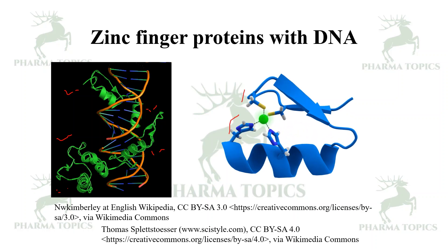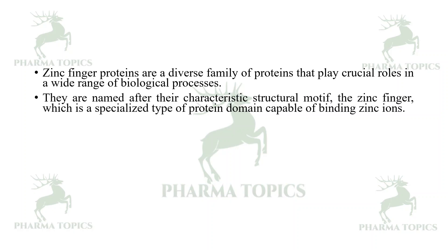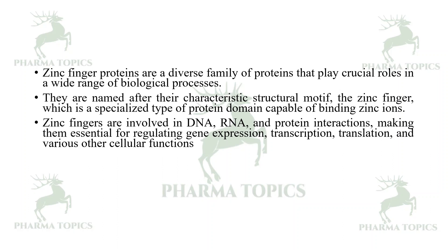Classically, two cysteine residues and two histidine residues coordinate with a zinc ion. Zinc finger proteins are a diverse family of proteins that play a crucial role in a wide range of biological processes. They are named after their characteristic structural motif — the zinc finger — which is a specialized protein domain capable of binding zinc ions. Zinc fingers are involved in DNA, RNA, and protein interactions, making them essential for regulating gene expression, transcription, translation, and various other cellular functions.